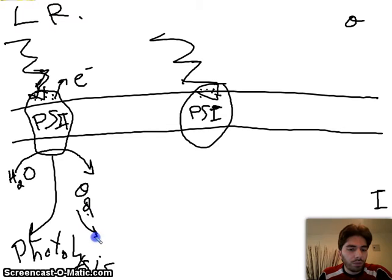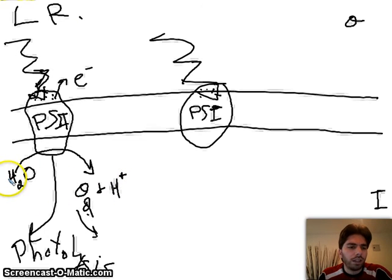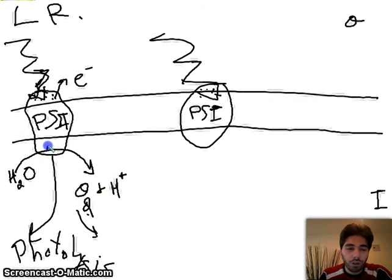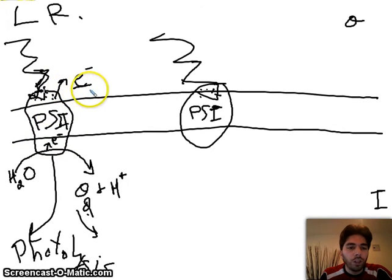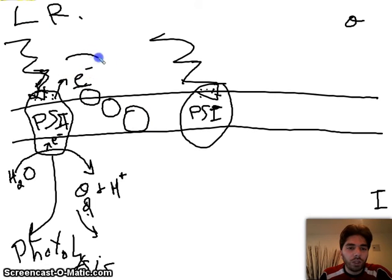In photolysis, H2O is broken down into oxygen — which is released into the atmosphere — and H+ ions. To balance this reaction we have 2H2O giving 4H+ ions. This breaking down of water gives us the electrons that photosystem 2 lost, so photosystem 2 lost electrons and gained them back. We're now fine with photosystem 2.